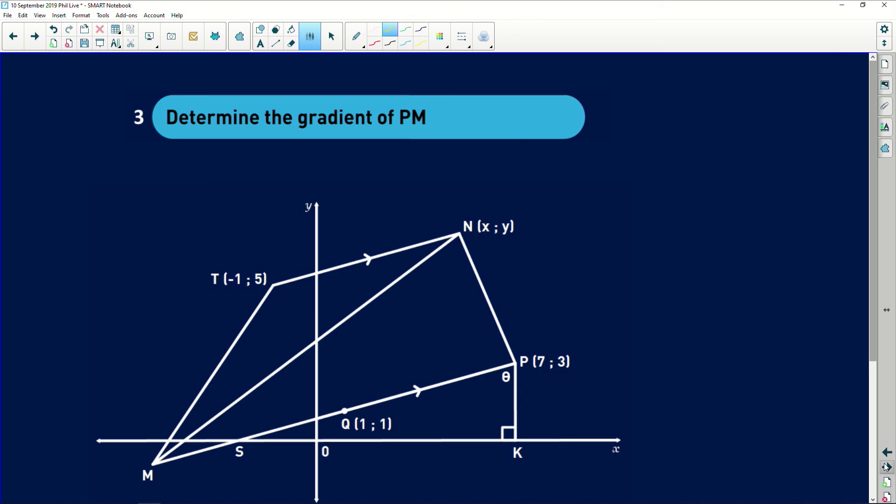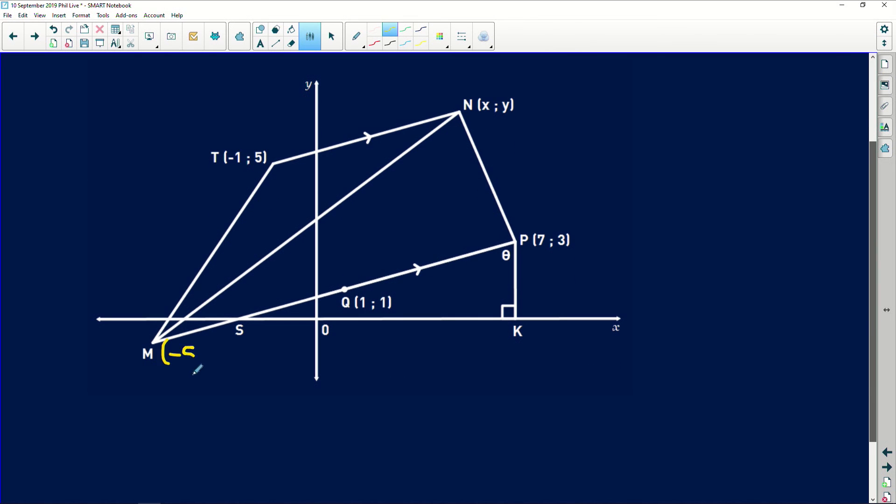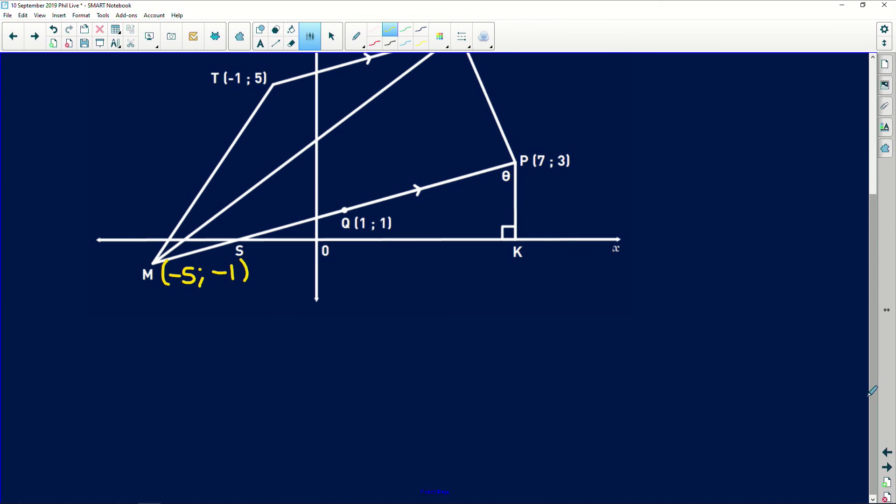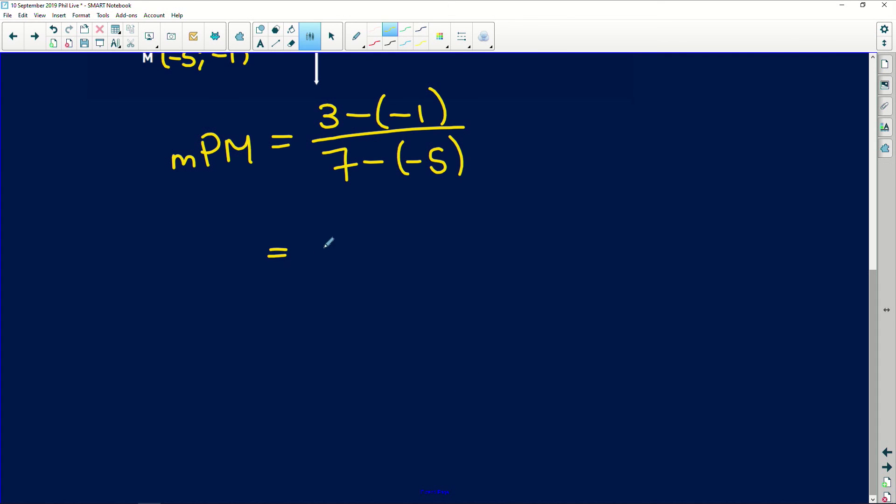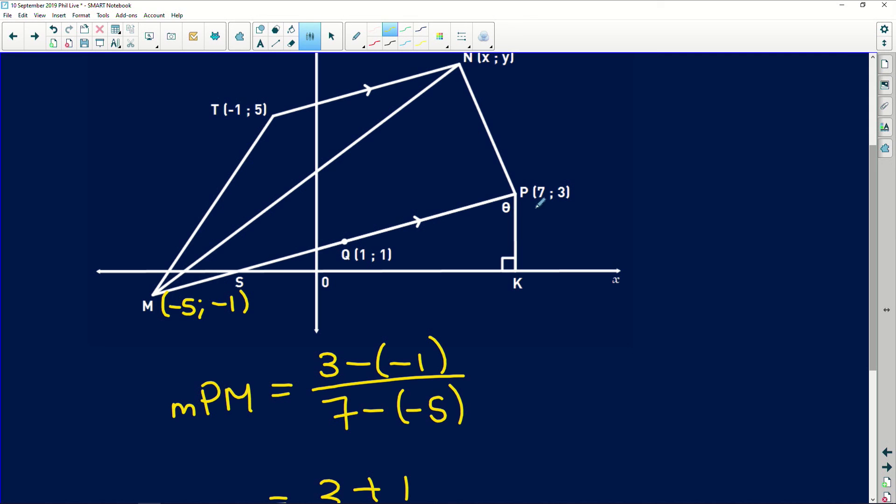Now, if we go and look, the X is very deep into the negative and the Y is a little deep into the negative. Negative 5 and negative 1. Now it says, determine the gradient of PM. We found that this here is negative 5 and negative 1. And finding the gradient is easy. You should know this off by heart by now. Gradient of PM is equal to the change in Y. We have 3, if we start at P, minus the Y value at M divided by the change in X. We take 7 and we subtract negative 5. We're going to get 3 plus 1 over 7 plus 5, which gives us 4 over 12. And they will definitely look for your simplified form. That is 1 over 3.